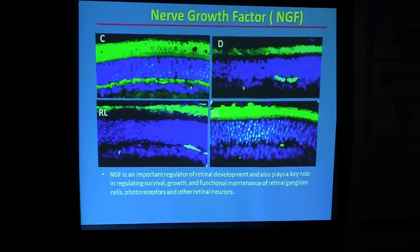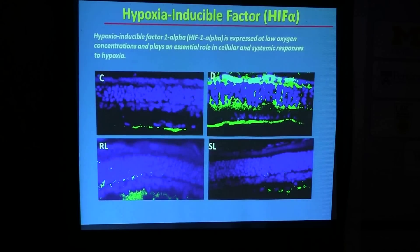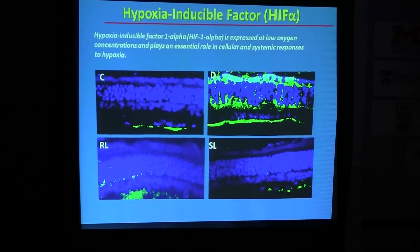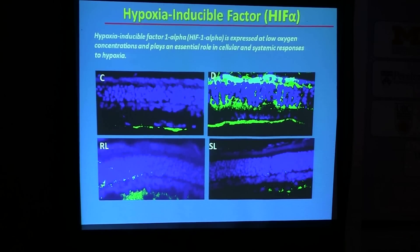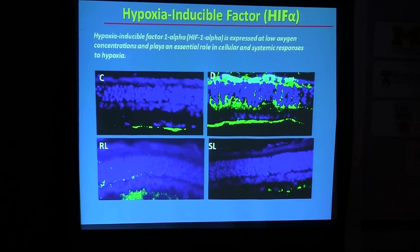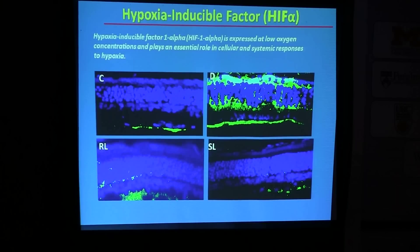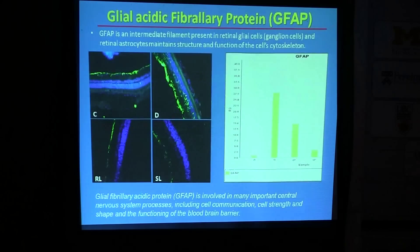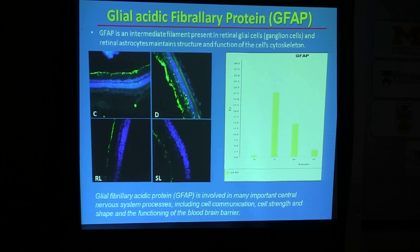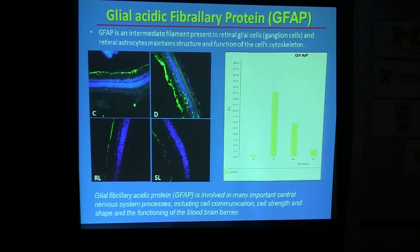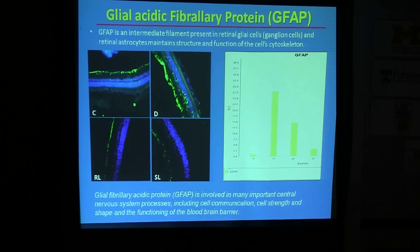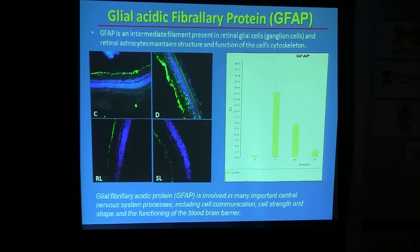We observed improvement with both soluble lutein and regular lutein compared to the diabetes group. Hypoxia-inducible factor alpha (HIF-α), which is expressed under low oxygen concentration and is essential in cellular and systemic responses, showed improvement with both forms of lutein — but soluble lutein performed better than regular lutein. We also looked at GFAP, an intermediate filament in retinal glial cells, and we are planning to pursue further research in this area.